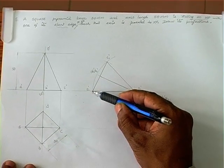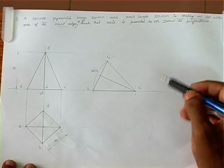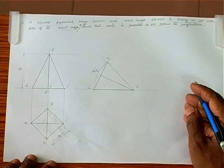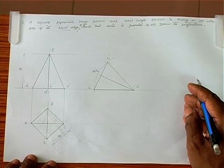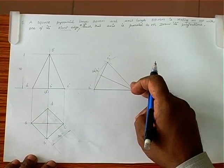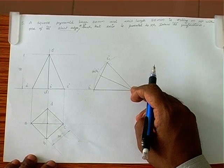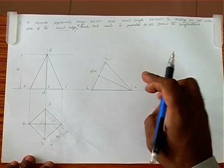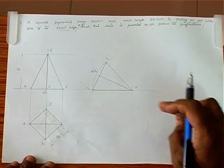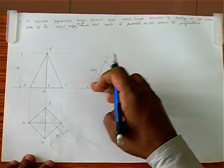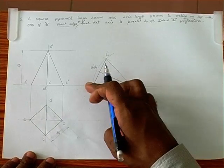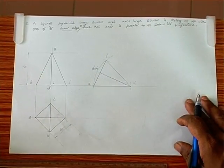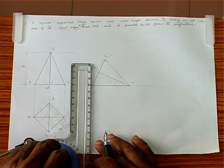Slant edge OA is completely on the ground, meaning O dash A dash is on the XY line. The rule is: if a line is on HP, its front view is completely on the XY line. Here, slant edge OA is on HP, therefore O dash A dash is on the XY line.